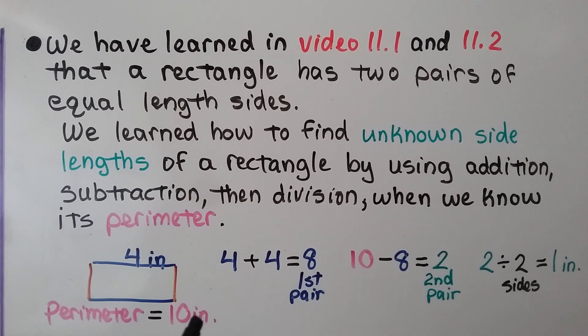We can take the 10-inch perimeter and subtract that 8 inches from it, and that will equal 2. 10 minus 8 equals 2. That's our second pair. Because it's a pair and it's for two sides, we need to divide 2 by the two sides, and we find out that each of these sides are 1 inch. That's really confusing. Go back and watch videos 11.1 and 11.2.